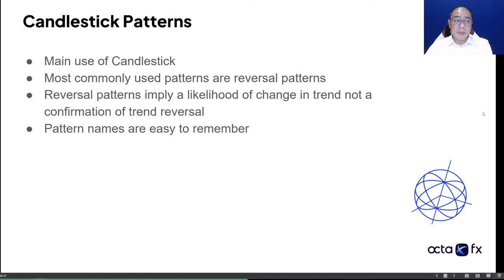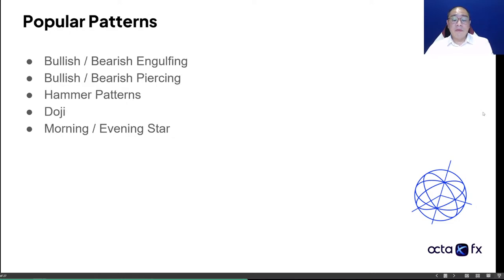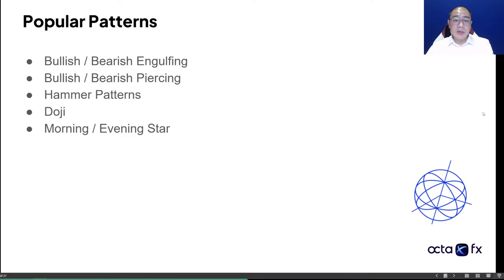The good thing about candlestick patterns is that the names are actually really easy to understand. Tonight we will talk about bullish and bearish engulfing, bullish and bearish piercing, the hammer patterns which are really trend dependent, the dojis, and the morning and evening star. These are your five most popular and most used candlestick patterns. You need to understand the rules and the context before you take that as a potential trend reversal in the market.